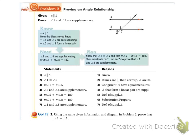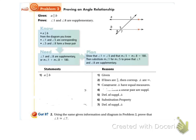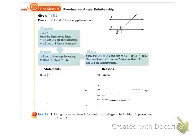Here's a proof for us to do. We're going to use this same picture from the example proof, but we are going to try to prove that angle 1 is congruent to angle 7. I still have the given — I'm still told that A is parallel to B. Eventually I want to be able to say that angle 1 is congruent to angle 7.